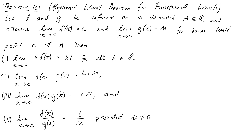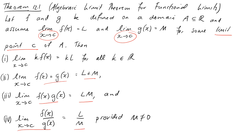We have two functions, f and g, defined on some common domain A. The limit as x goes to the same value c of each of the functions is L and M respectively. c is a limit point — just the usual technical restriction on c — and then the following four things hold, just the same as what we had for sequence convergence. The limit of a scalar multiple is the scalar multiple of the limits; the limit of the sums is the sum of the limits; the limit of the product is the product of the limits; and the limit of the quotient is the quotient of the limits, provided that the limit in question is not equal to zero.